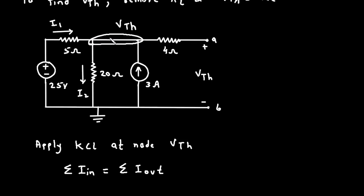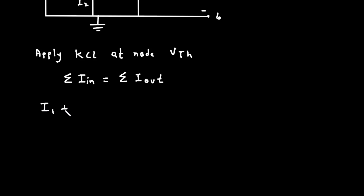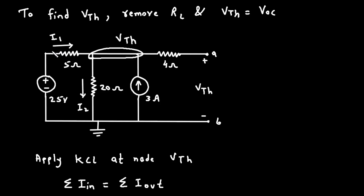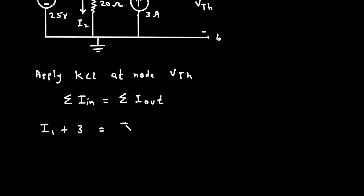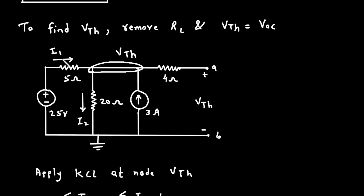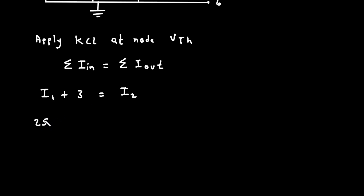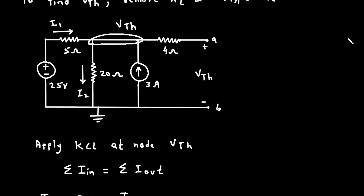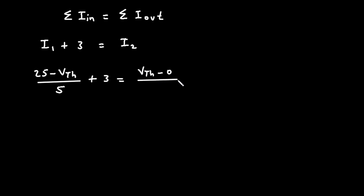According to Kirchhoff's current law, summation of all the currents entering a node is equal to summation of all the currents leaving the node. At this node, I1 is the entering current and this 3 ampere is the entering current. So I1 plus 3 is equal to I2. Now I1 can be written as (25 − VTH) / 5, by Ohm's law. Plus 3 is equal to I2, and I2 is VTH − 0 divided by 20.